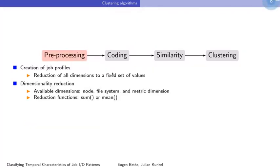Looking at the steps: the first thing we can do is aggregate all dimensions to get a fixed-size set of values, which can be used for general-purpose machine learning since it expects a fixed size of values. If we want to keep the timeline representation, we keep the time dimension and can aggregate other dimensions such as node, file system, or metric dimensions. In this work we use sum and max functions for aggregation.